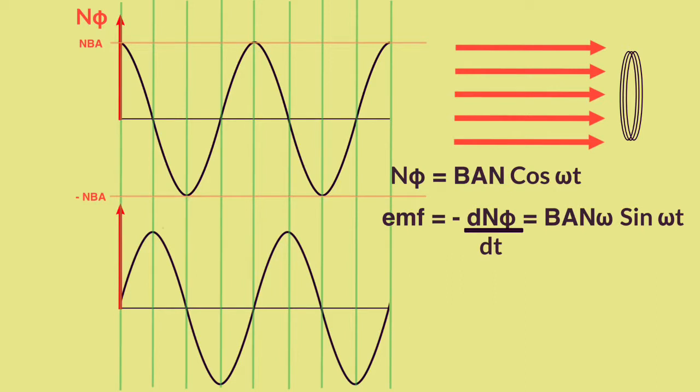Maximum positive gradient here gives us maximum negative value here, and all the places where the gradient is nothing, all these peaks and troughs, is where the EMF has no value. The EMF has no value at all the peaks and all the troughs and it has a maximum value at all the steepest parts. But because of the negative of dNφ by dt, it also has to be the negative of the gradient.